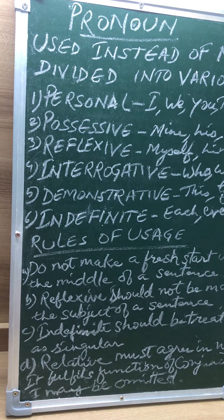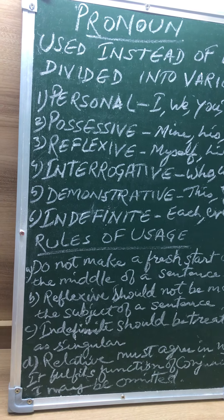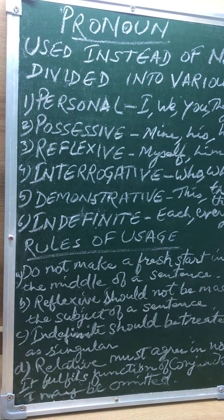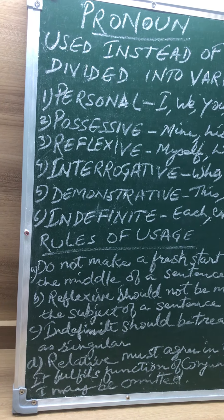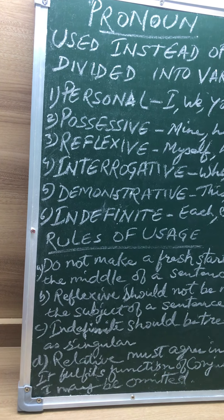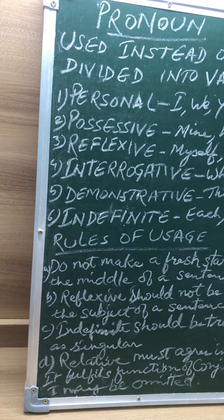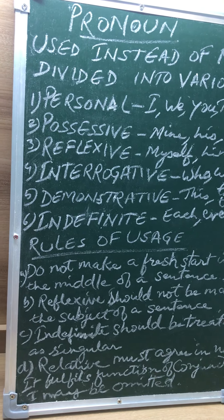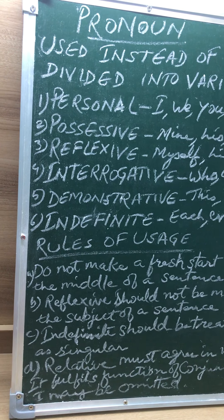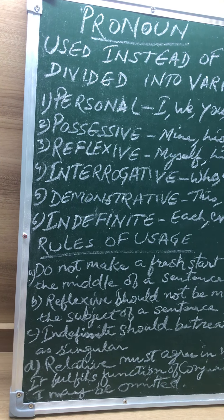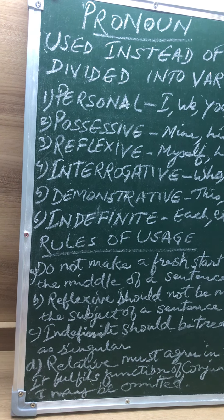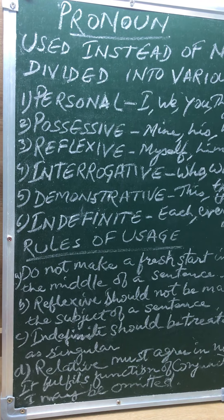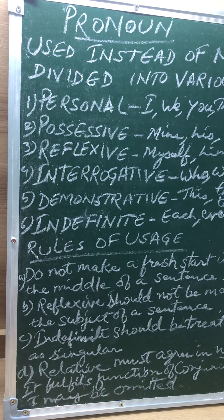The relative pronouns who, which, that must agree in number and person — as in 'it is I who am knocking at the door.' Who usually refers to persons, while which and that refer to animals and things. However, 'that' is generally used after the pronoun 'it', for example: it was he that abused me. That is also used after the superlative or equivalent of superlative, for example: he is one of the greatest dealers that were ever born.